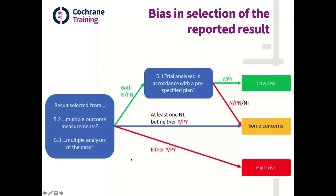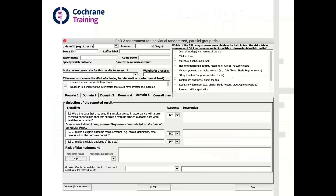For this domain, there is an algorithm that has been developed, moving from the answers to the signalling questions to the assessment, and you can see the algorithm here. You also have access — which I find really useful when evaluating the risk of bias — to an Excel file that is available on the website.